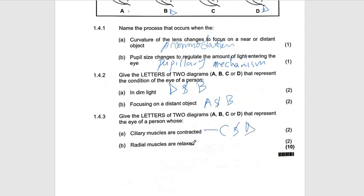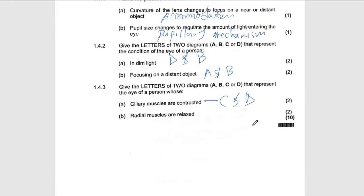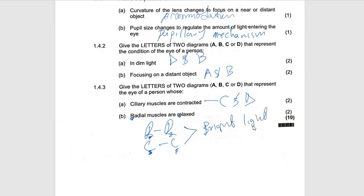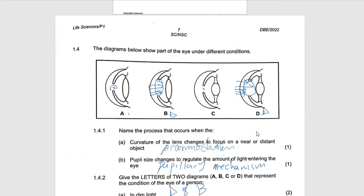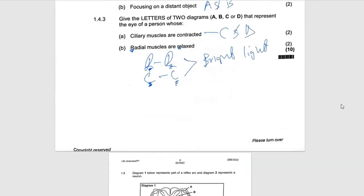Radial muscles relax. Remember: R with R, C with C — radial muscles relax, circular muscles contract. Since we have not mixed them up, therefore it becomes bright light. If it becomes bright light, the diameter of the pupil becomes smaller. Looking for a small pupil diameter, I can see it here and here. So the answer is A and C.